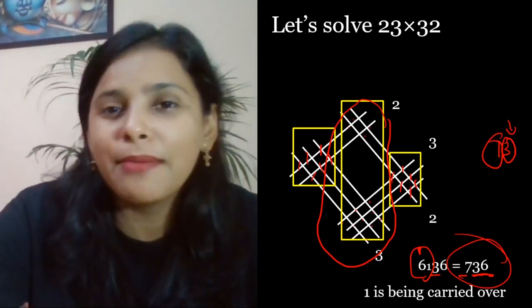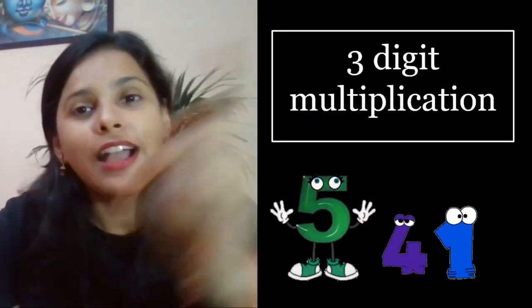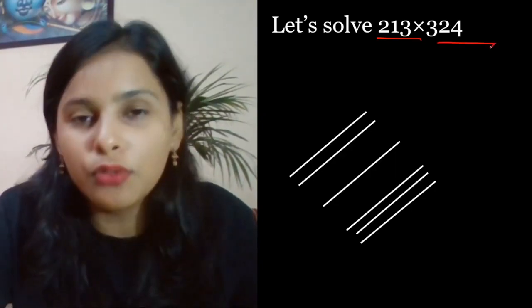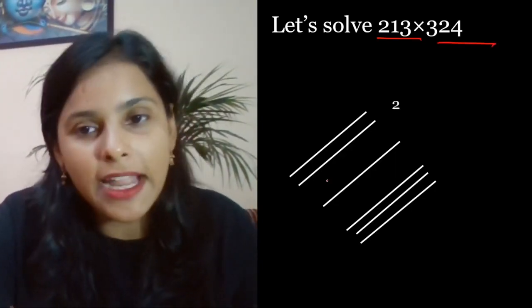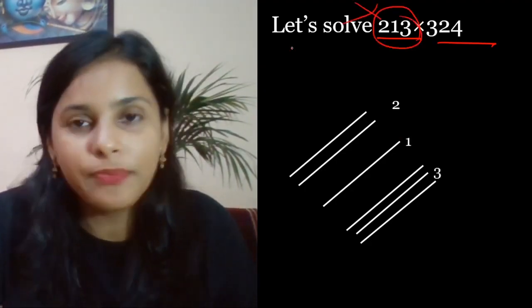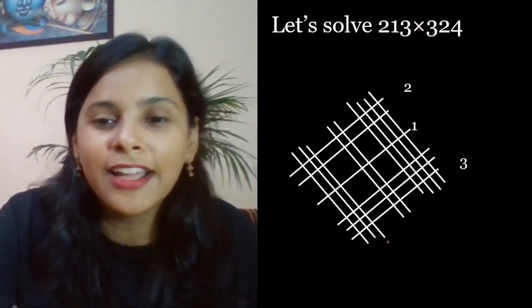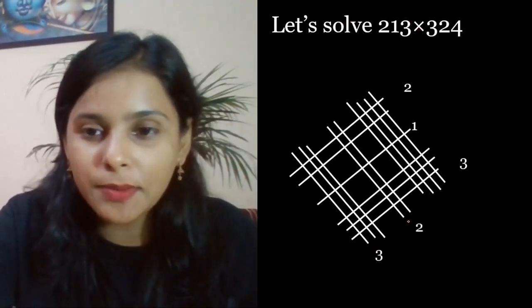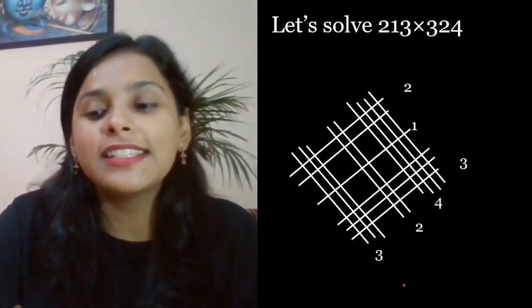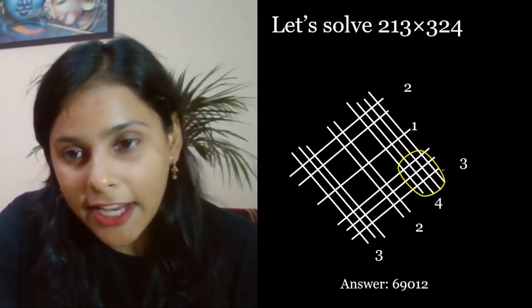Now come to 3-digit multiplication. The numbers are 213 and 324. So 2 lines, then 1 line, then 3 lines. Now look at 3, 2, 4 also. Make 3, 2, 4, so 3 lines, 2 lines cross obviously, and 4 lines. Now guys, look at me.